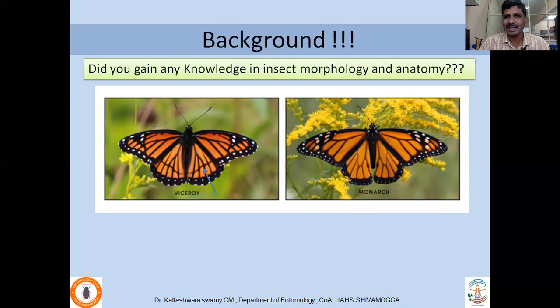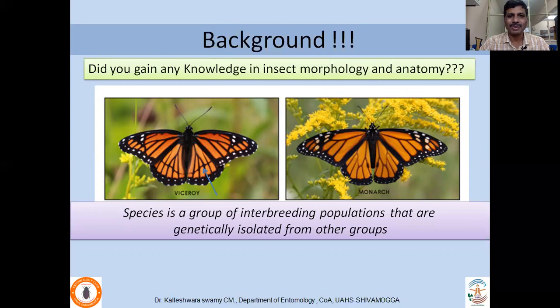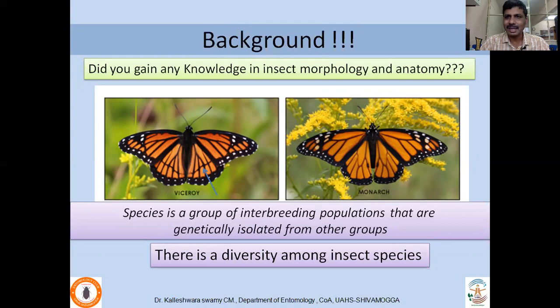So what do we mean by species? A species is a group of interbreeding populations that are genetically isolated from other groups. That means a species should not mate with another species and should not produce viable offspring. Only then is it considered a particular species. With that basic idea, we can say that there is a diversity among insect species.